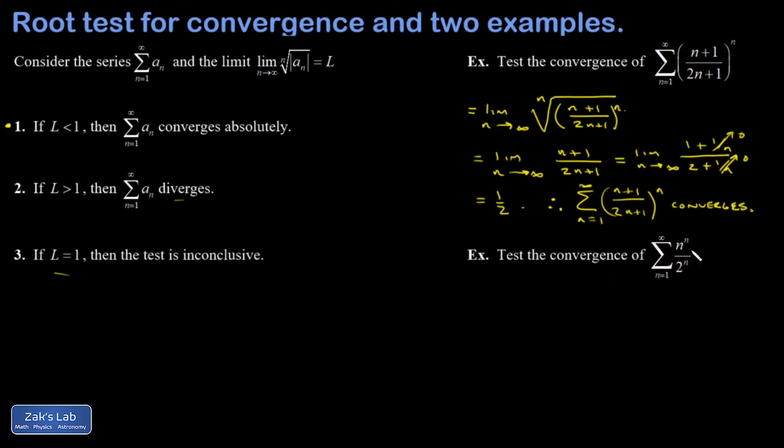I could express this all as n over 2 to the nth power. And then when I apply the root test again, the nth root is going to undo the nth power. So I have the nth root of (n/2) raised to the n. And the nth root and the nth power undo each other. And I have limit as n goes to infinity of n/2. And that goes to infinity, which is way bigger than 1, so this series diverges.